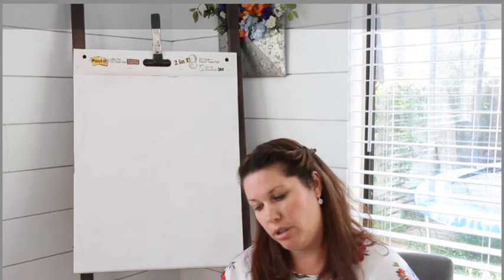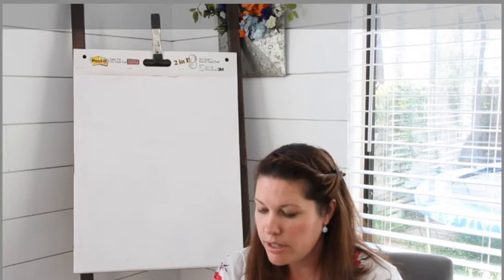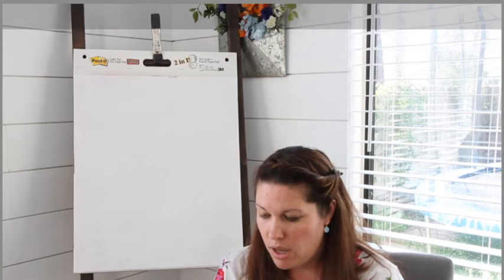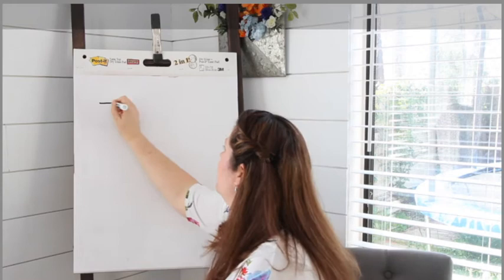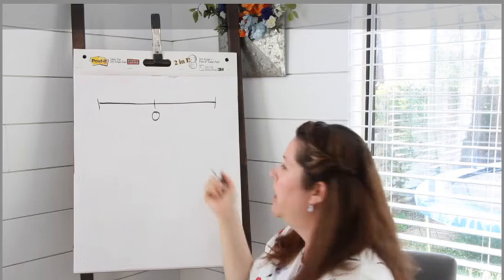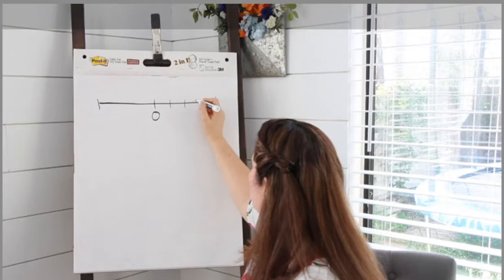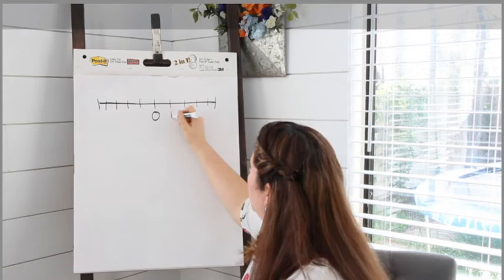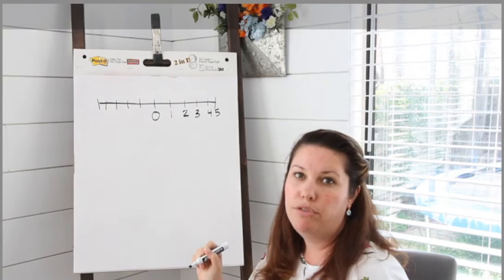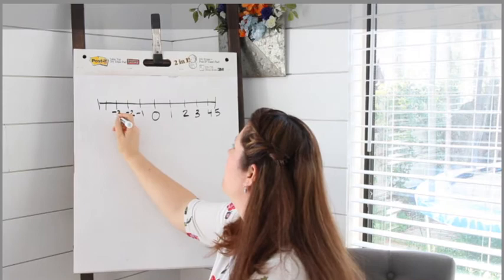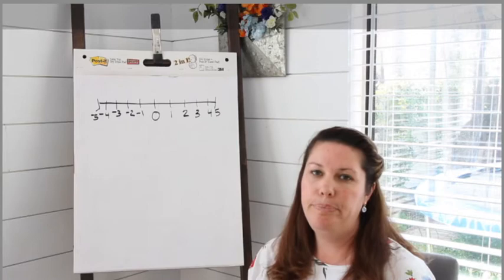Let's look at number 14. Number 14 says: what number is the opposite of the opposite of five? What can you say about the opposite of the opposite of a number? I'm going to draw a number line. My origin is zero — that's my placeholder, it has no value, it's just where everything starts. To the right of zero are all my positive numbers: one, two, three, four, five. To the left of my zero are all my negative numbers.